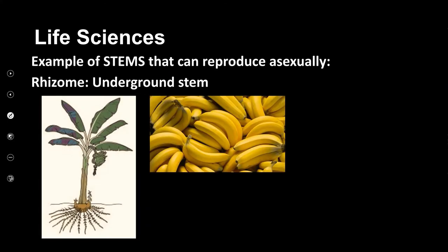The next example, believe it or not, is bananas. This is called a rhizome, and a rhizome is an underground stem. You would have heard this word when we did the fern — the fern had a rhizome. By mitosis, a little part of the stem starts to grow, and what do I have right next to it? A beautiful new banana tree. Banana is an example of how some plants can use asexual reproduction.